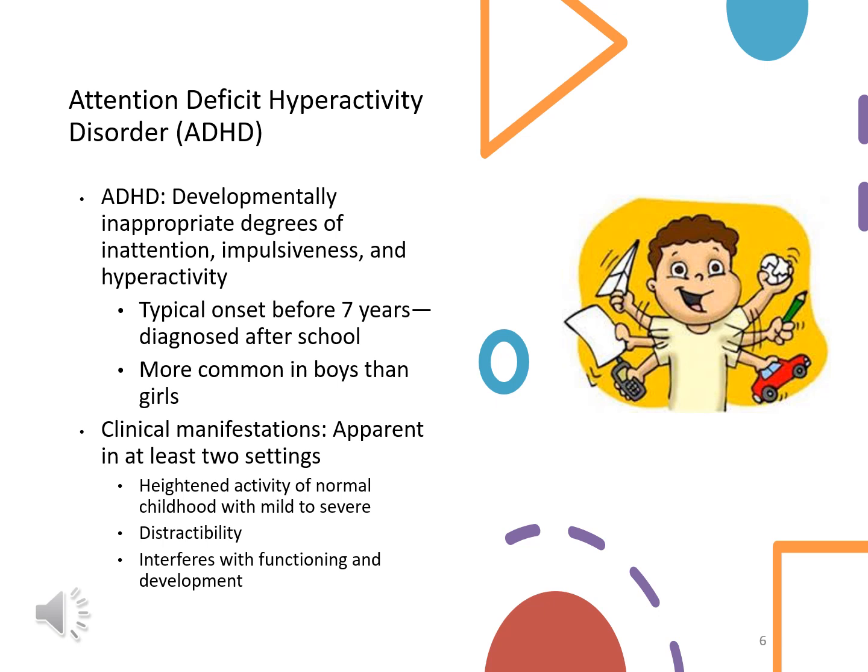In order for ADHD to be diagnosed, these behaviors have to be seen in two separate settings — typically at home and at school. It's important to get feedback from teachers, parents, and other family members, not just from a parent standpoint. The behaviors also have to interfere with the child's ability to actually function, learn, and gain skills.